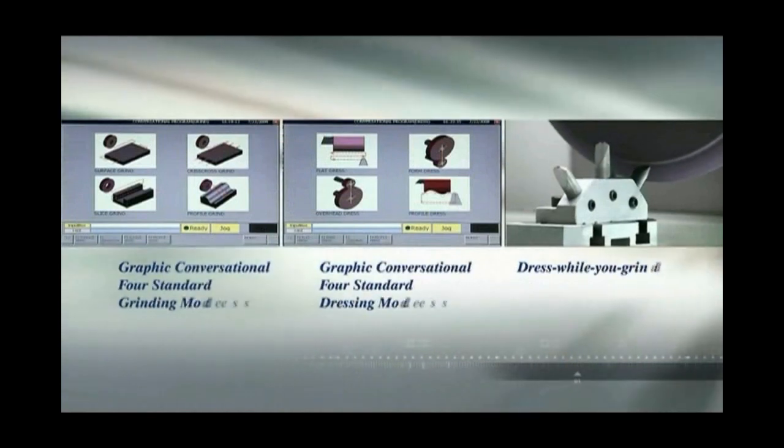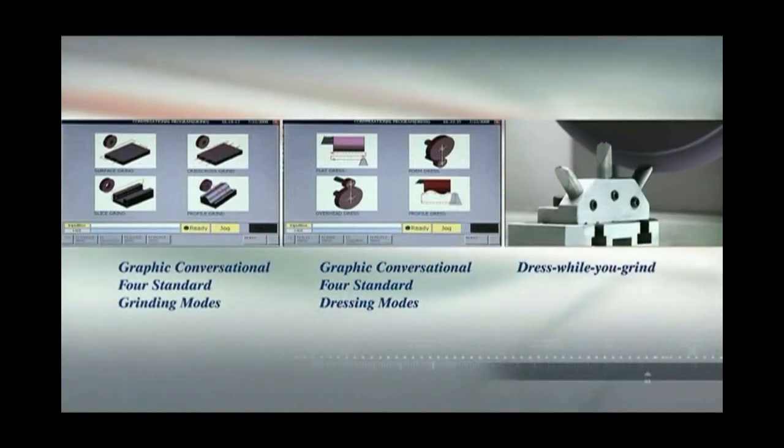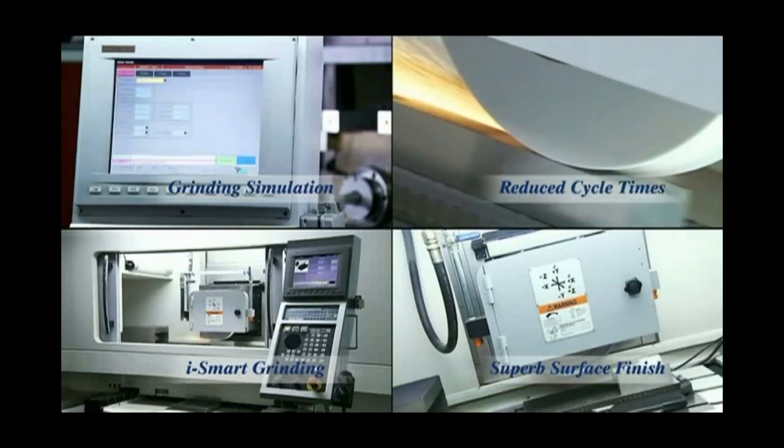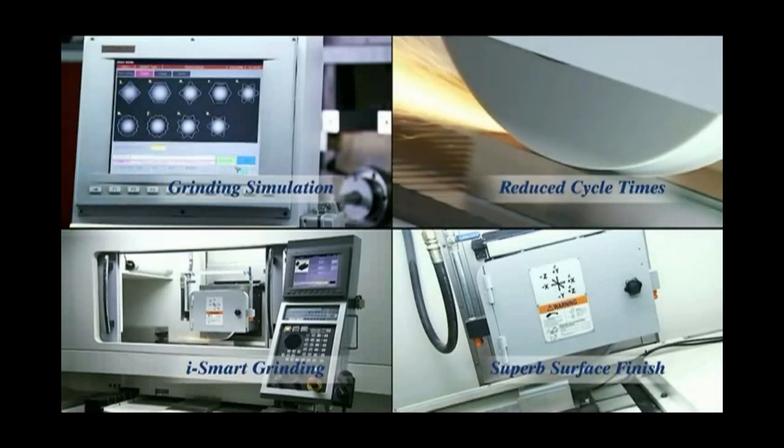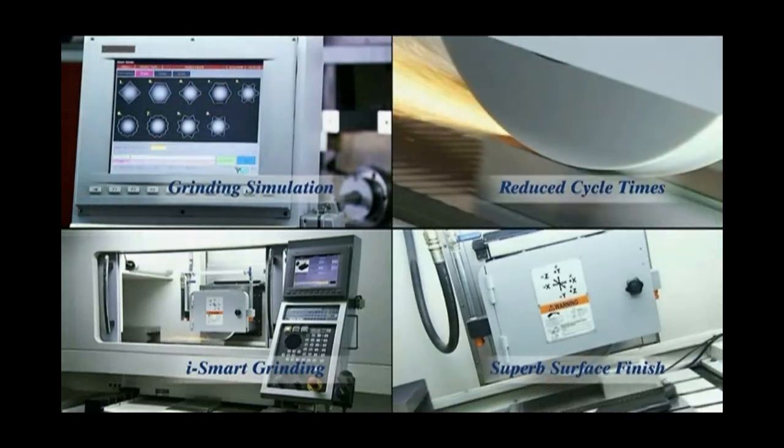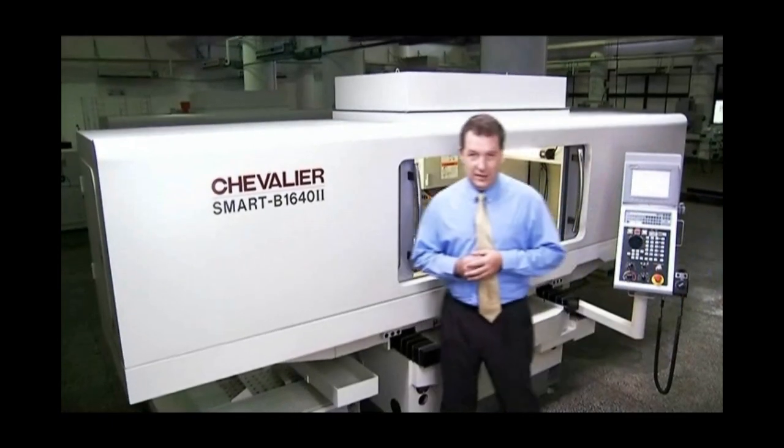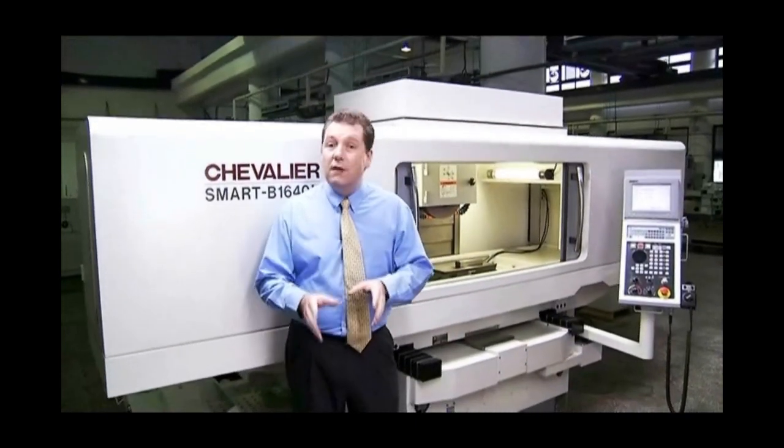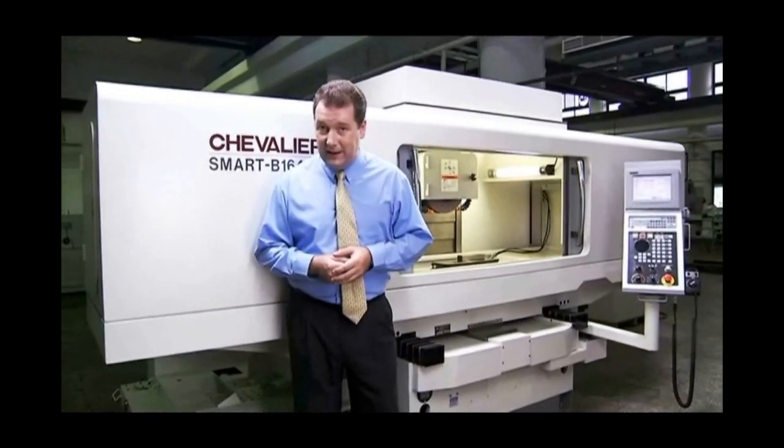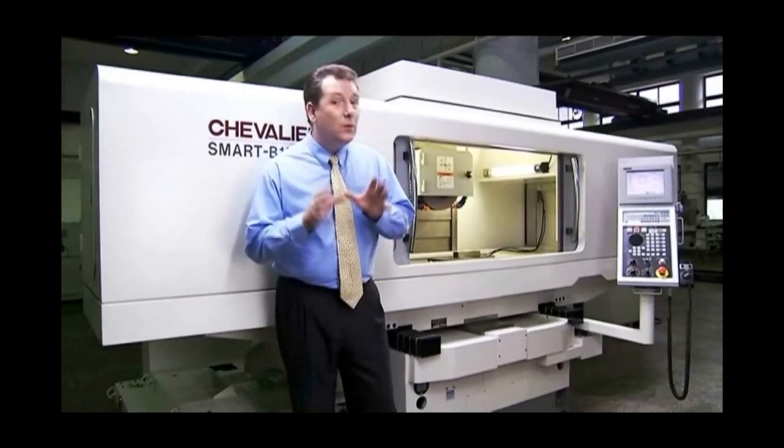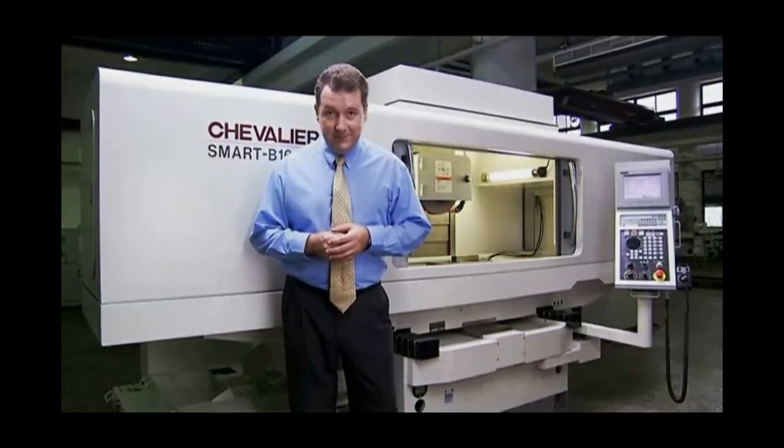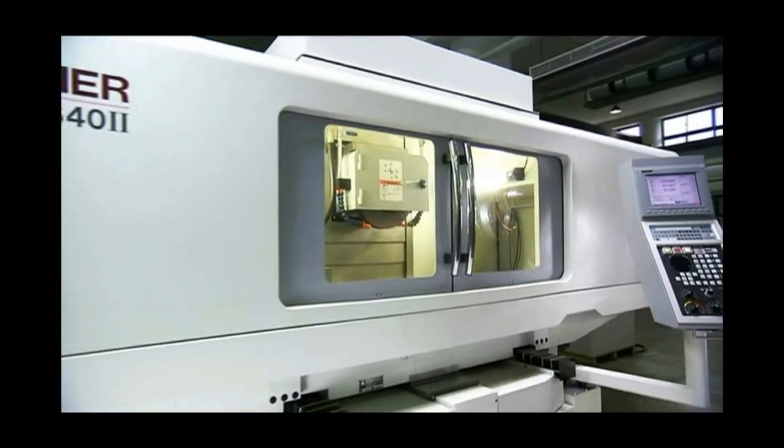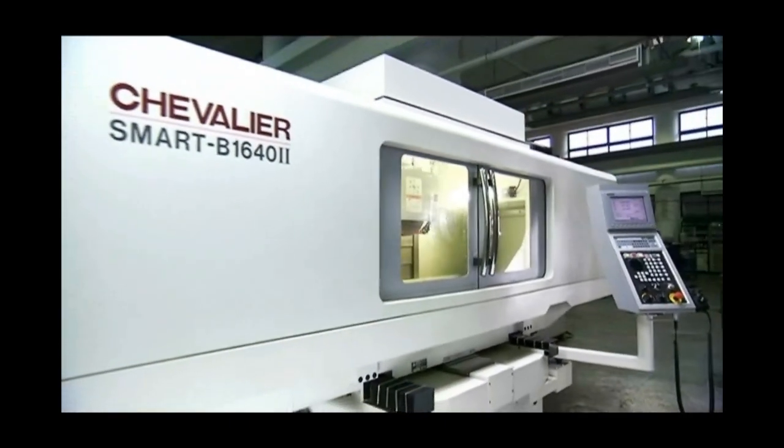The Smart B1642 grinder from Chevalier is a real grinding revolution. It has a mass of features to cover all of your key grinding operations. And all of this is available at a fraction of the cost of similar machines from European and Japanese manufacturers, but with even more features. This machine is one that you have to consider for multi-purpose grinding operation.